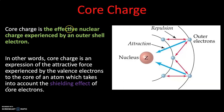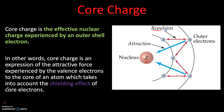Let's start with the definition and then expand from there. Core charge is the effective nuclear charge experienced by an outer shell electron. Within the nucleus of an atom there are protons, and those protons have a positive charge. Around the nucleus you have your electrons, and those electrons all have a negative charge. These electrons feel a repulsion with each other because they are all negatively charged.